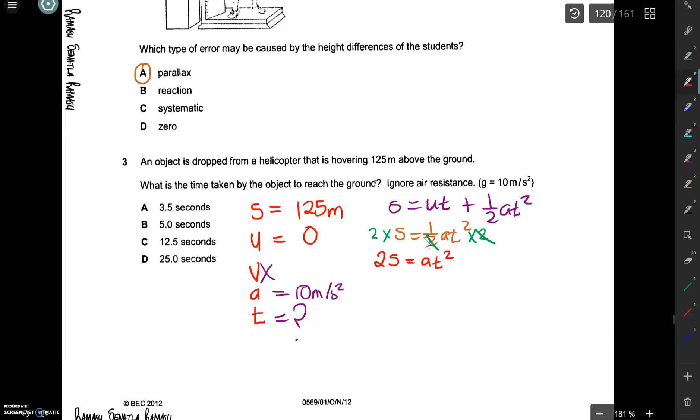Then the next step is to divide by A on both sides. Divide by A. So then we end up with T squared. T squared is equal to 2S over A.